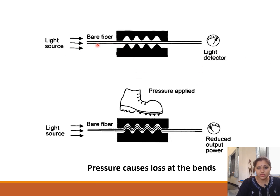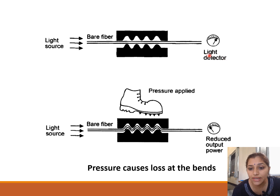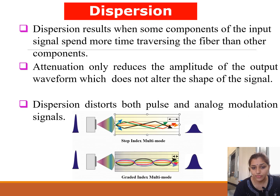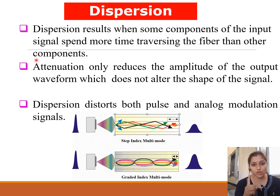Here you can see a bare fiber compared to a pressure-applied fiber. Because of the applied pressure, microscopic bends are introduced. The light detector shows maximum power for the bare fiber, but for the pressure-applied fiber the output power is reduced. So attenuation is because of absorption, scattering, and bending losses.